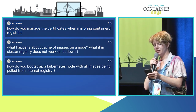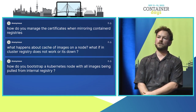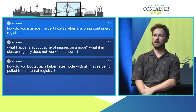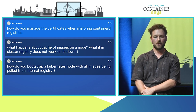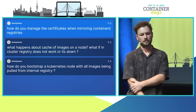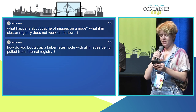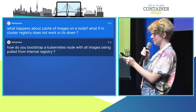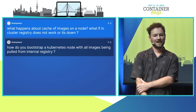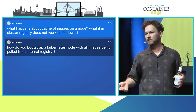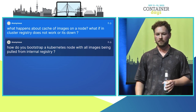Question: how do you manage certificates when mirroring ContainerD registries? For authenticating against a repository, that's also doable — there's more configuration you put into the ContainerD config if necessary, or you can handle it at the proxy repository. Regarding image cache: if the cluster registry doesn't work, nothing changes fundamentally — you're still pulling OCI images from a registry. If it's down, you can't pull anymore.